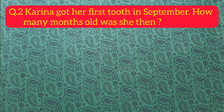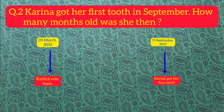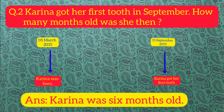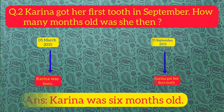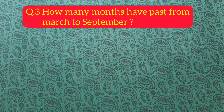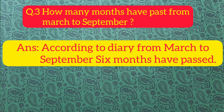Next question: Kareena got her first tooth in September. How many months old was she then? According to the diary, Kareena was born on 5th March 2015 and she got her first tooth on 15th September 2015. So we can count the months from March to September — Kareena was 6 months old. Next question number three: how many months have passed from March to September? According to the diary, from March to September, 6 months have passed.